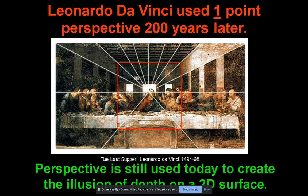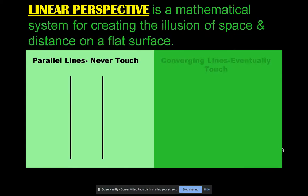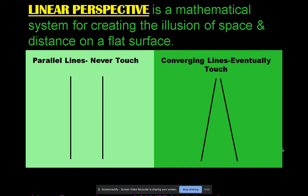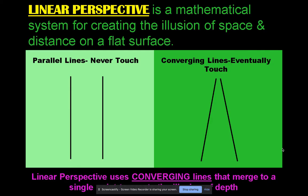Leonardo da Vinci used one-point perspective nearly 200 years later in his painting The Last Supper — he actually used it in many of his paintings. Perspective is still used today because it is a proven system, and linear perspective is also a mathematical system.